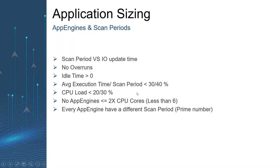The number of app engines should always be lower than or equal to double the number of CPU cores, but we recommend not exceeding six app engines. Every app engine should have a different scan period, and each scan period is recommended to be a prime number. Why? Because if they're not prime numbers, two app engines might execute at the same time, causing CPU spikes. With different prime number scan periods, you can be 100% sure that app engines will never execute simultaneously, giving you a smooth CPU load.